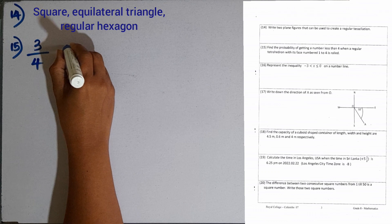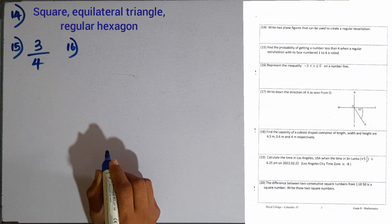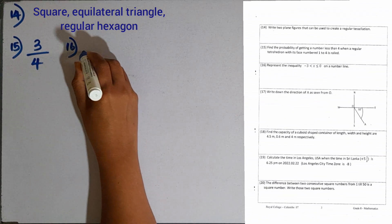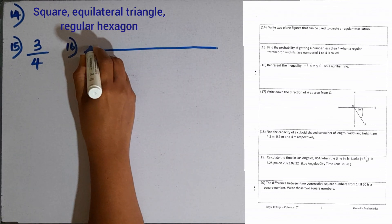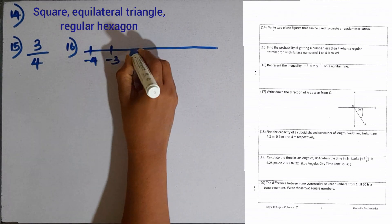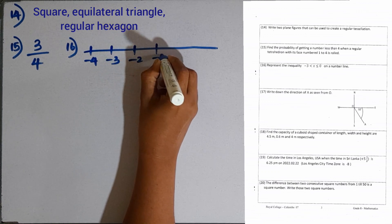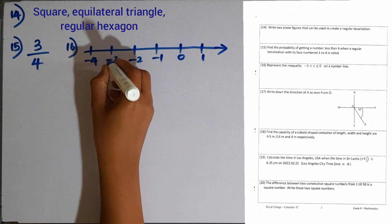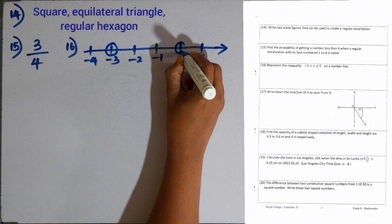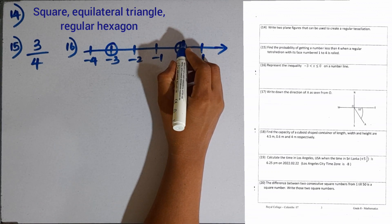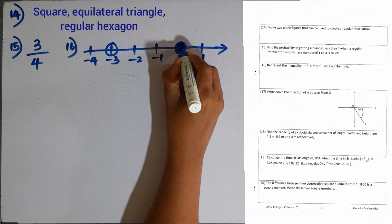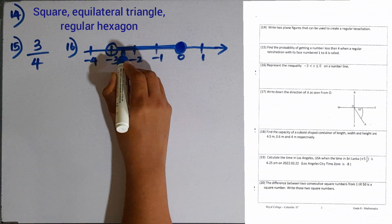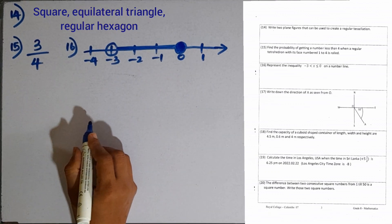Question number 16. Represent the inequality minus 3 less than x less than or equal to 0 on a number line. Drawing a number line: minus 4, minus 3, minus 2, minus 1, 0, then 1. The endpoints are minus 3 and 0. Since x is less than or equal to 0, shade that circle. Between minus 3 and 0 the region should be shaded.